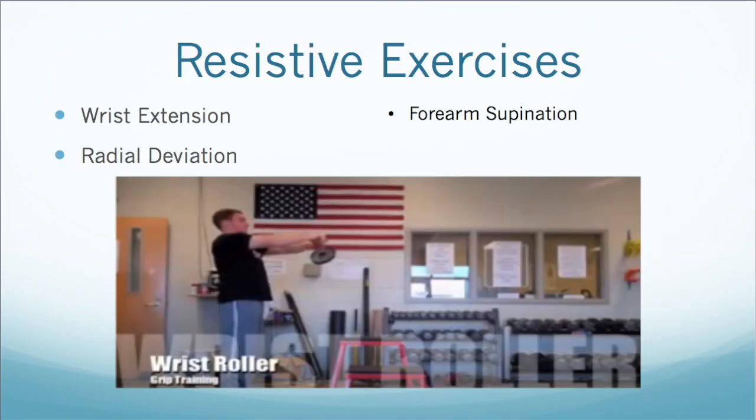Once you have stretched the involved muscles, it is key to strengthen them in the new range so they do not become weak and lengthened. Good directions to work in are wrist extension, radial deviation, and forearm supination, as these are key muscle groups involved in grip strength, which is commonly impaired with radial nerve entrapment. A good example of eccentric and concentric wrist extension is the dowel roll, as seen here.